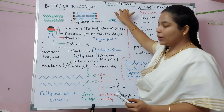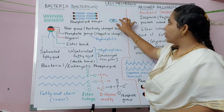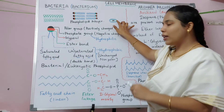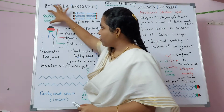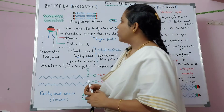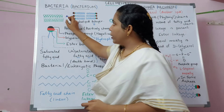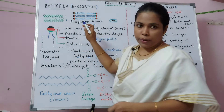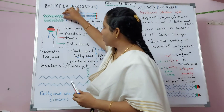This plasma membrane is in turn surrounded by a cell wall. The cell membrane structure is called a phospholipid bilayer — 'bi' represents two. It has two layers of phospholipid, hence it is called a phospholipid bilayer.